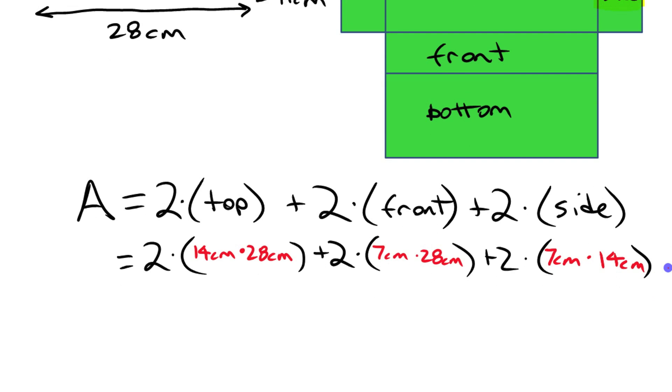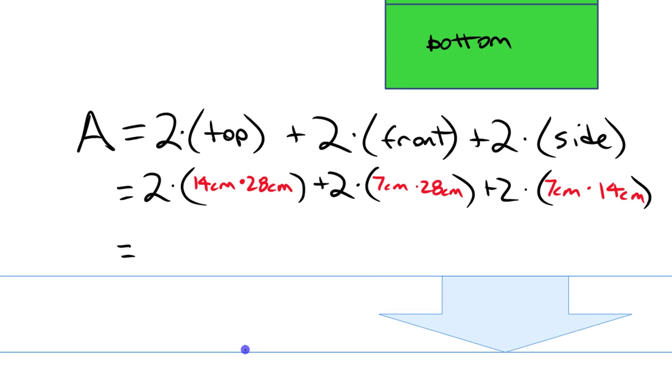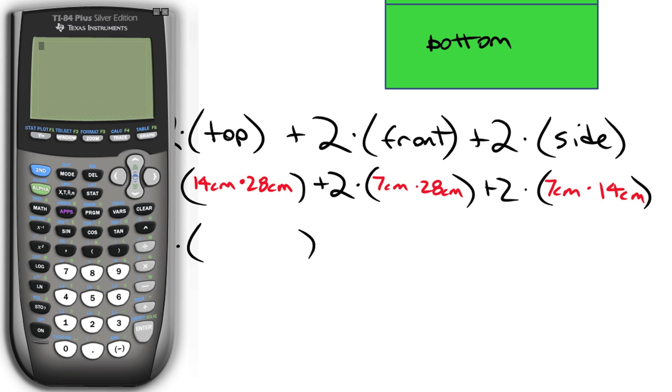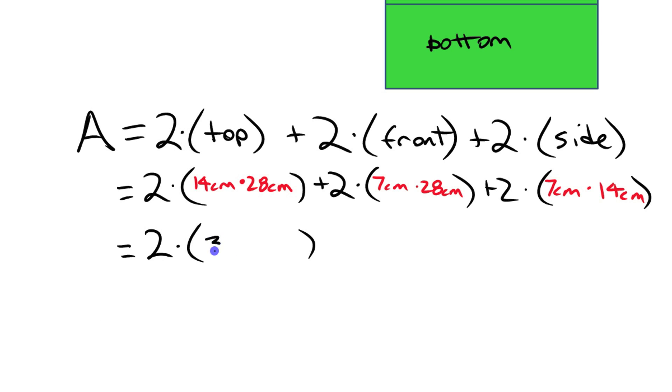I'm going to work out each of these areas separately and do one step at a time here. You could put it all onto a calculator all at once. Work it out if you want. So we have two, 14 times 28. If you don't know what that is, it's 392. 392. Now this is going to be centimeters squared because it's an area. But also you know that if you multiply centimeters times centimeters, you get centimeters squared. I like to put the units when I'm doing the calculation to keep track of everything.